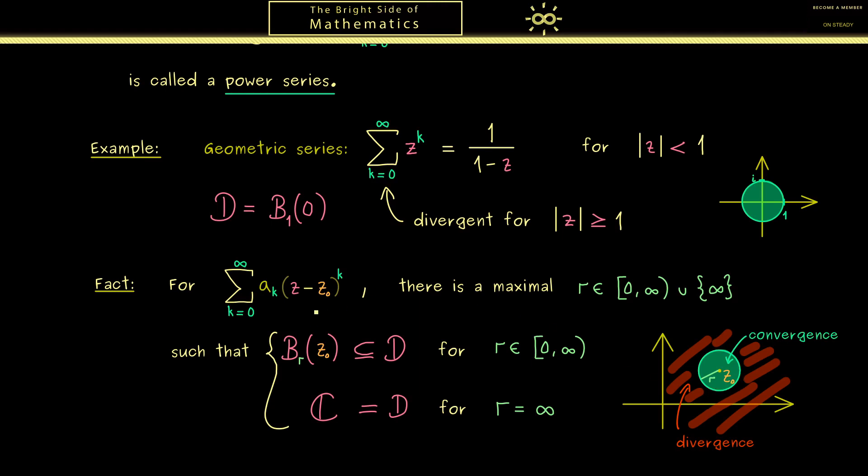The only thing we don't know in general is what happens at the boundary. Indeed depending on the power series different things could happen there. For example for the geometric series the boundary was completely divergent as well. However for a different power series you could have convergence or both cases mixed.